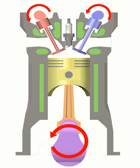Compression: this stroke begins at BDC, or just at the end of the suction stroke, and ends at TDC. In this stroke the piston compresses the air-fuel mixture in preparation for ignition during the power stroke. Both the intake and exhaust valves are closed during this stage.